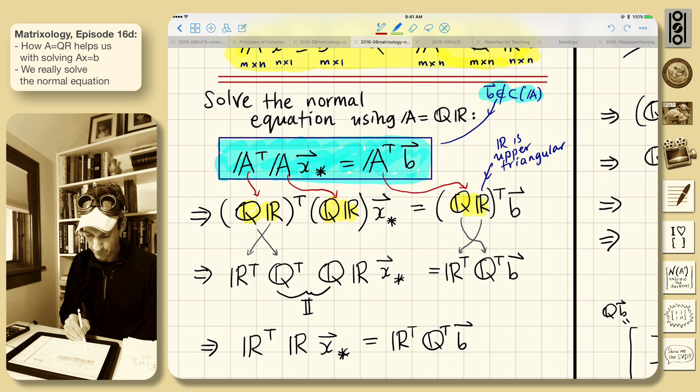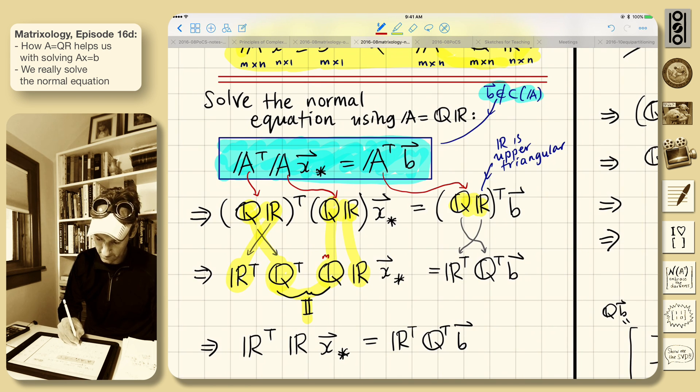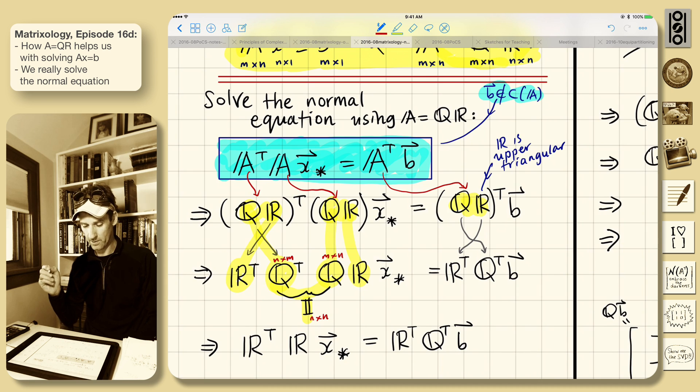And so that's what happened there. We get an R transpose Q transpose. And then we just have Q times R. This Q transpose Q has appeared. Again, that's the identity. We'll talk a little bit more about it, but that's quite fantastic. This is M by N. This is M by M. So it's an M by N identity. Pretty good.